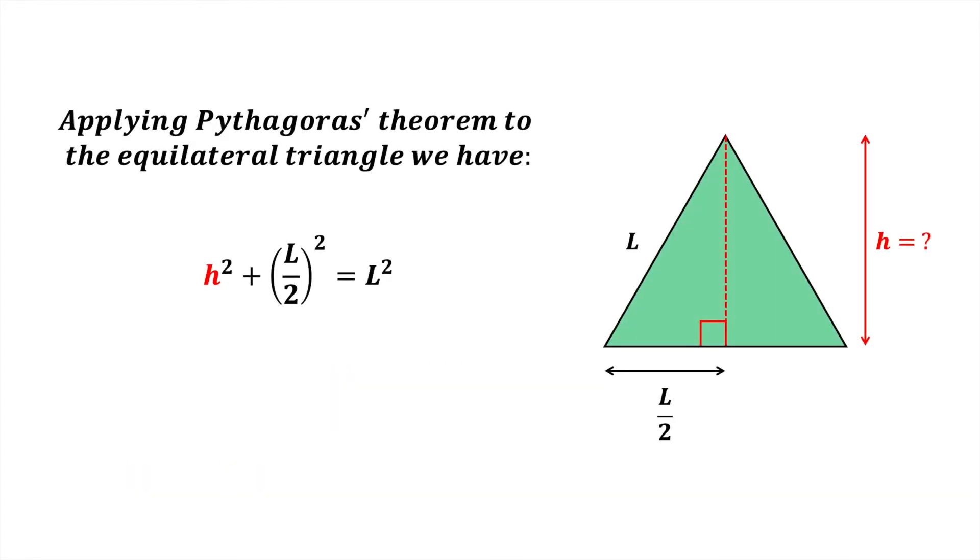Applying Pythagoras' theorem to the equilateral triangle, we have h squared plus L divided by 2 all squared equals L squared. We now solve for h in terms of L in simplified form using algebra.